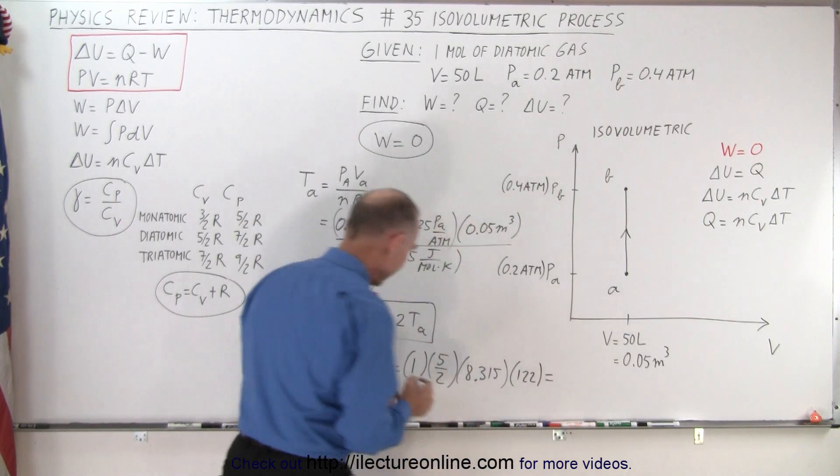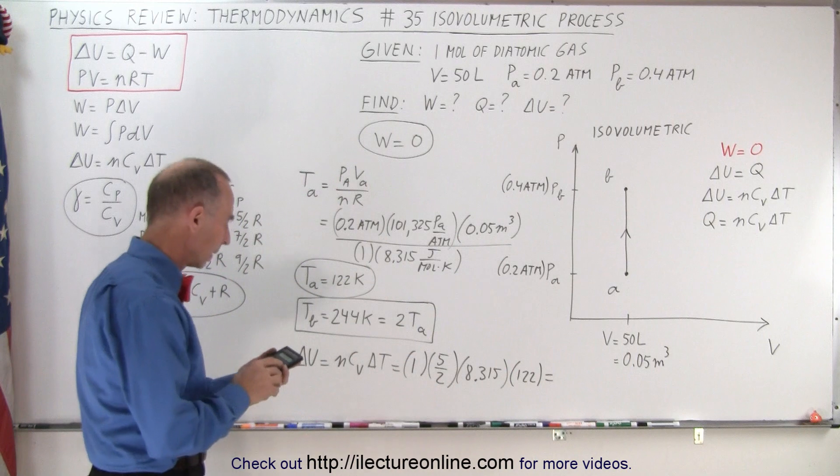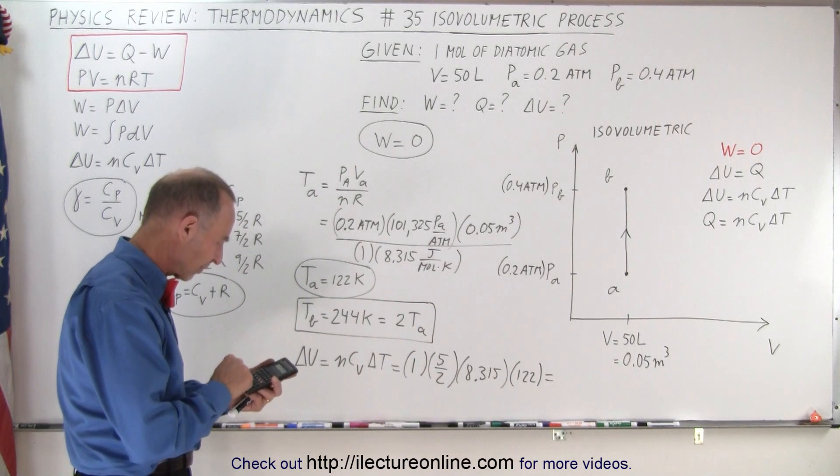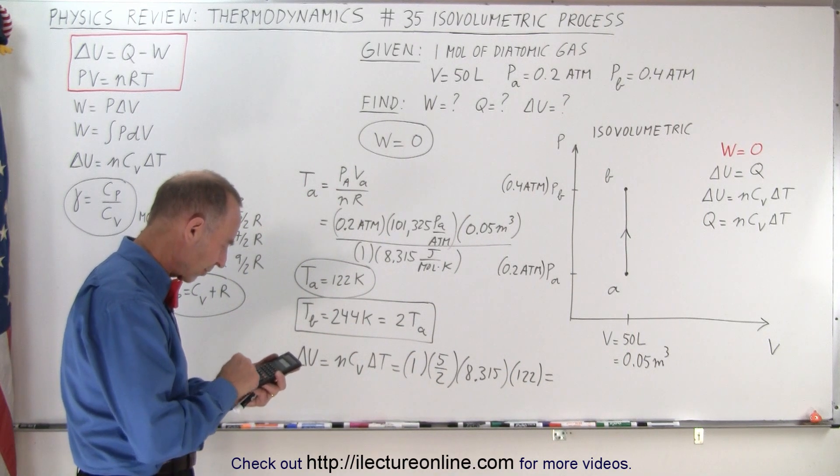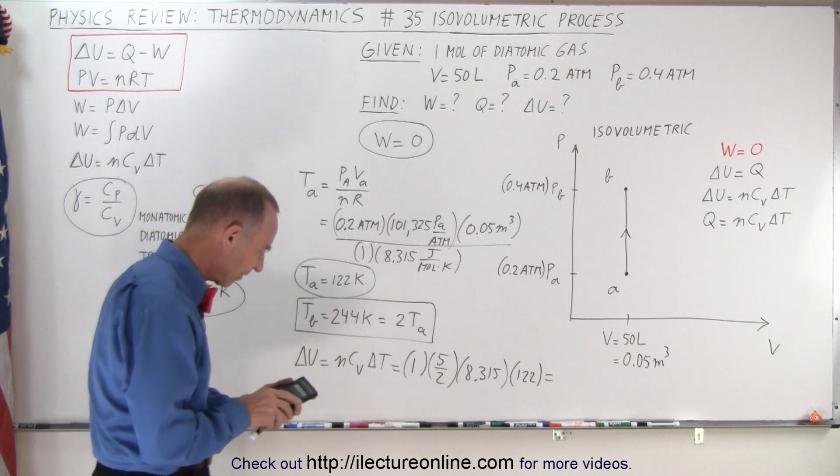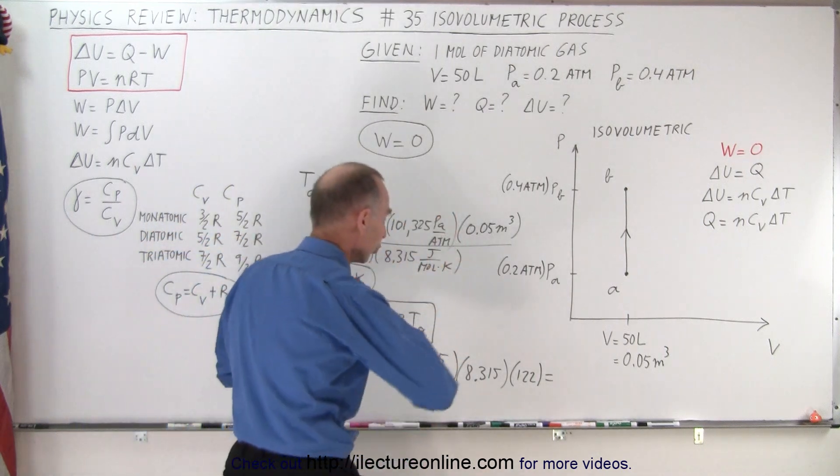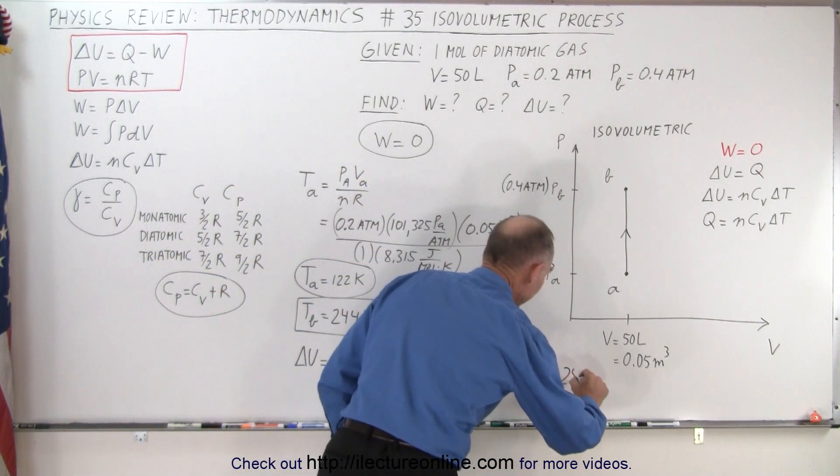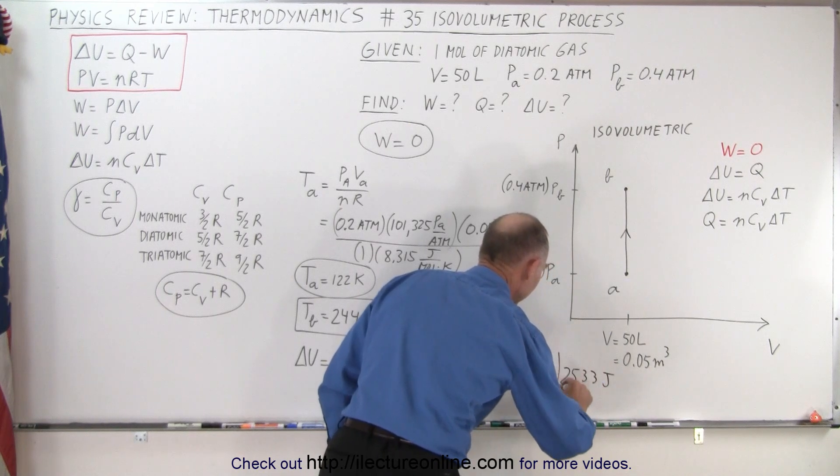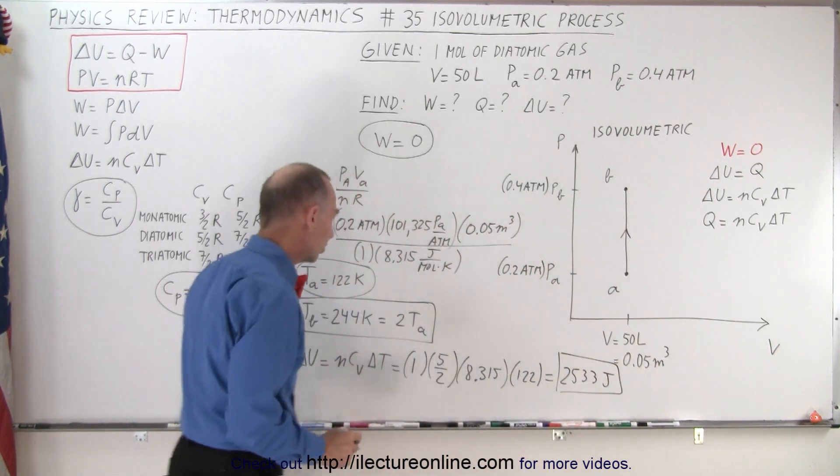And that will give us ΔU. 122 times 8.315 times 2.5 equals and we get 2533 Joules. So that is the change in the internal energy. It's positive means the internal energy went up.